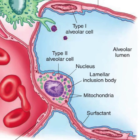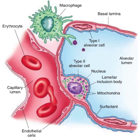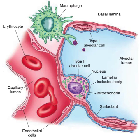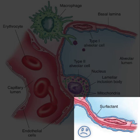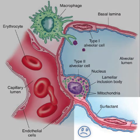Surfactant production doesn't start until late during intrauterine development. A baby born prematurely has a risk of developing inadequate surfactant and thus having lung collapse immediately after birth. This condition is called respiratory distress syndrome of the newborn, also called hyaline membrane disease of the newborn. The disease has an incidence of 60% in babies born before 28 weeks and is more common among mothers with diabetes, multiple births, and previous cesarean sections.